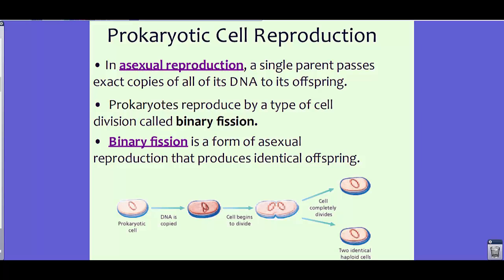Prokaryotes reproduce by asexual reproduction, which means a single parent passes exact copies of all its DNA to its offspring — there's no mixing as in sexual reproduction with two parents. A lot of prokaryotes reproduce by a type of cell division called binary fission, which produces identical offspring. You can see that the prokaryotic cell gets copied, that DNA is copied, the cell splits apart, and then you have two identical cells.